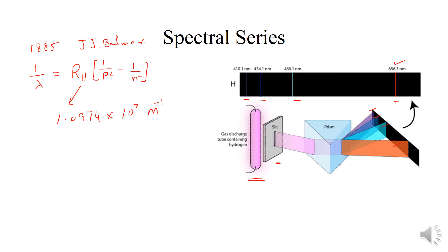Note کیجیے کہ left hand side پر ہمارے پاس 1/λ ہے اور lambda measure کیا جاتا ہے meters میں، اس لیے Rydberg constant کی value per meter میں آتی ہے۔ General phenomena میں p کی value ہمیشہ n سے ایک درجہ کم ہے یعنی n ہمیشہ p سے ایک step آگے ہوگا۔ بنیادی طور پر n وہ energy level ہے جہاں سے electron jump کرتا ہے اور p وہ energy level ہے جہاں پر electron fall کر کے set ہو جاتا ہے — n is the initial position, p is the final position۔ اس formula کی مدد سے آپ تمام spectral lines کو easily study کر سکتے ہیں۔